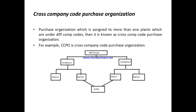Cross company code means the purchase organization is also assigned to multiple plants, but those plants belong to different company codes. In this case, CCPO is a purchase organization assigned to plant B and plant C. Plant B is assigned to company 1 and plant C is assigned to company 2. Because the purchase organization spans plants under different company codes, we call it a cross company code purchase organization.